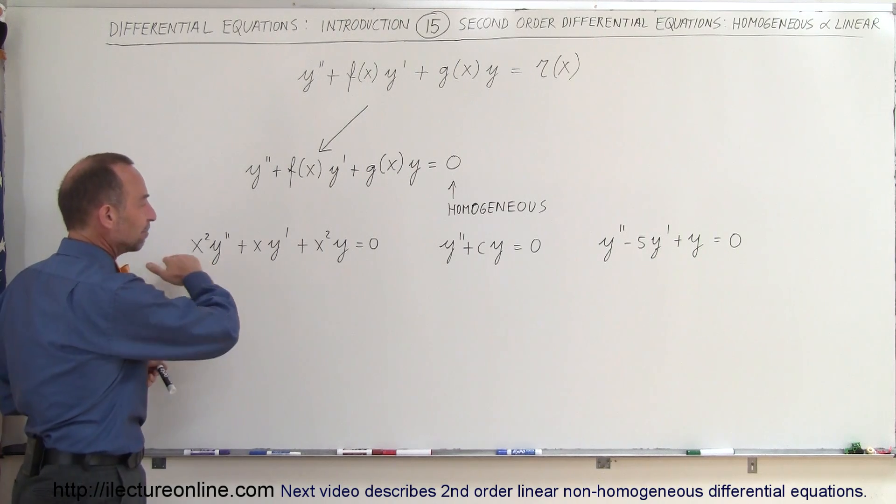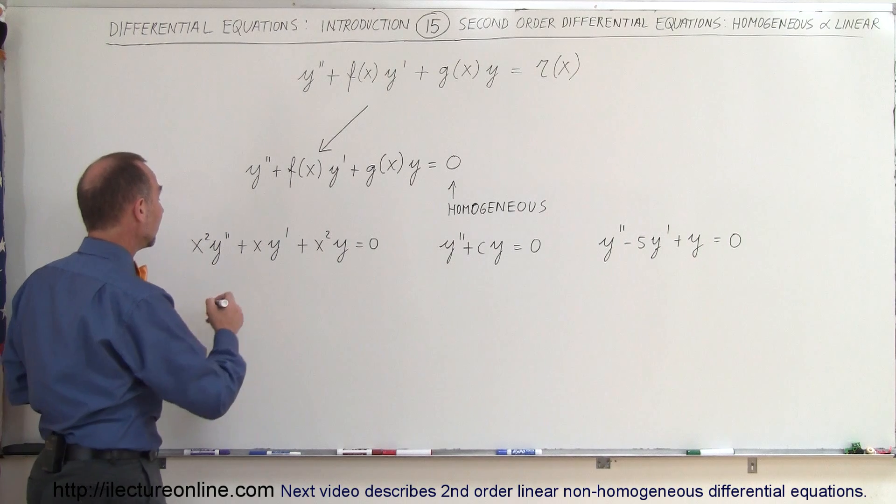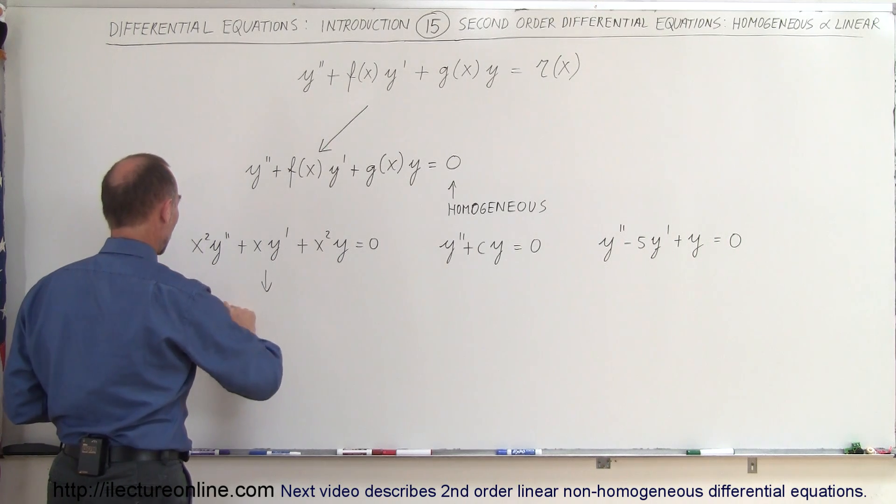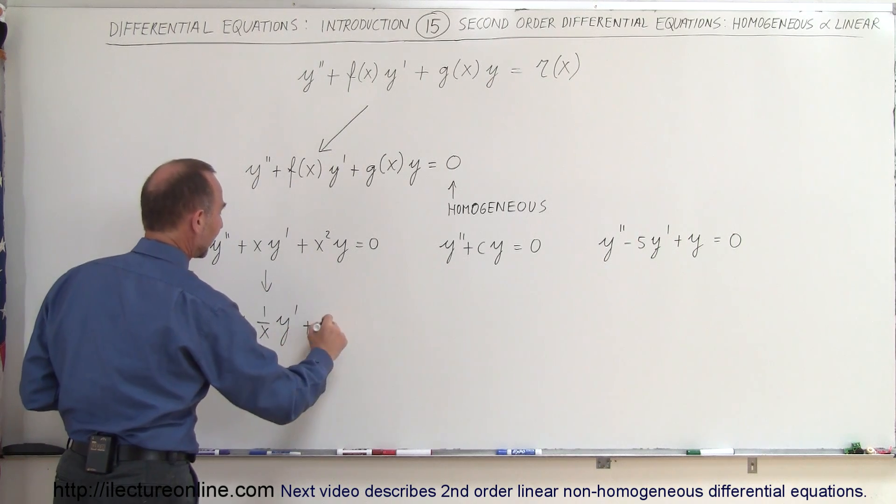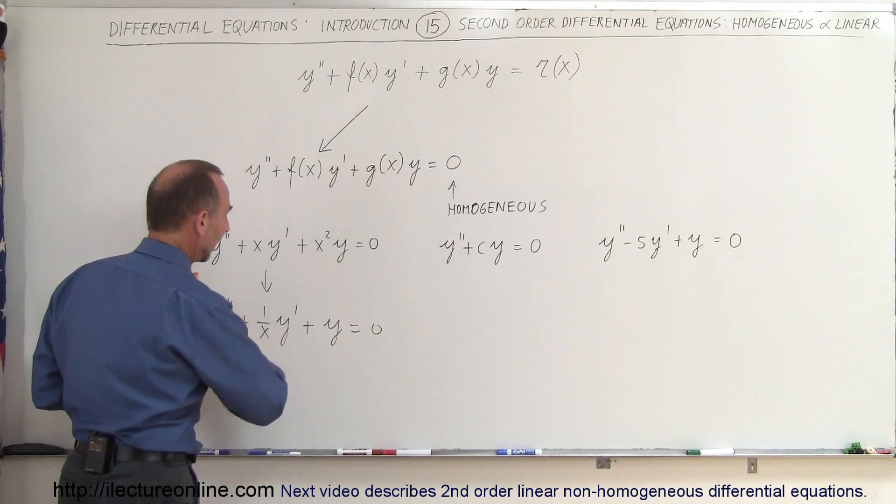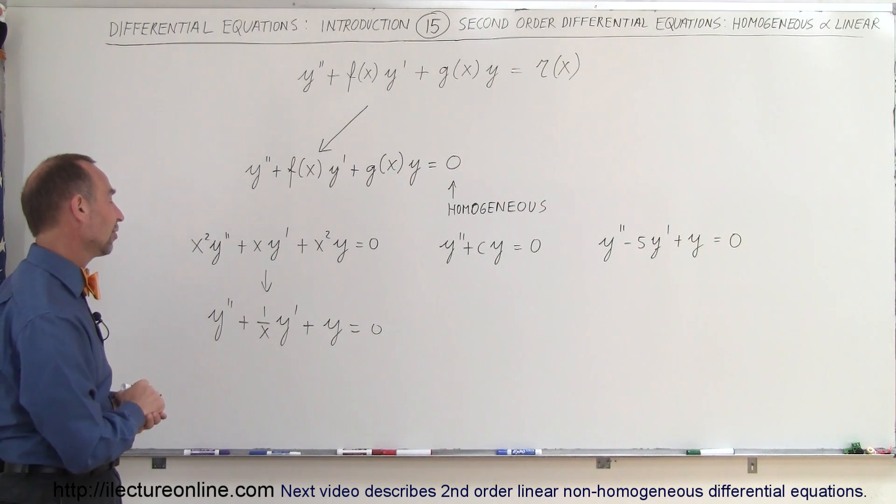Well, it turns out no because we can divide both sides of the equation by an x squared and if we do that this equation then becomes y double prime plus one over x times y prime plus one times y equals zero and this is obviously a linear second-order homogeneous differential equation.